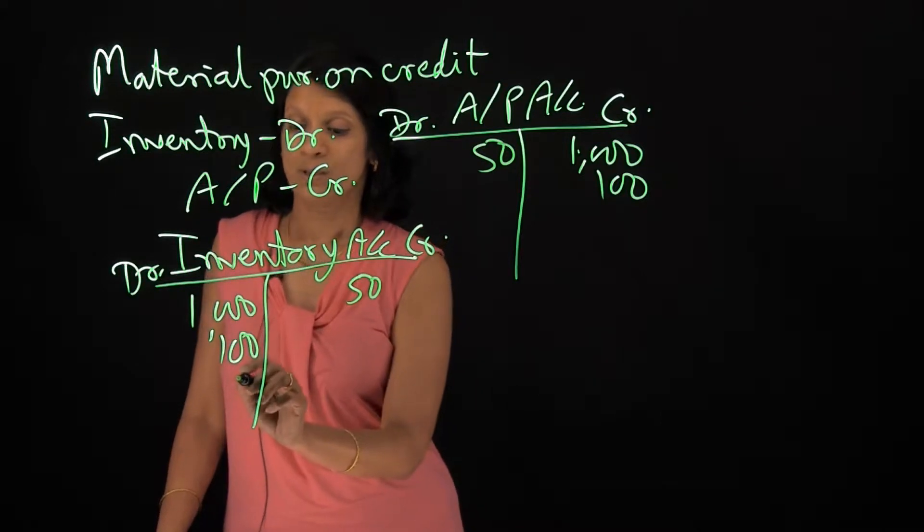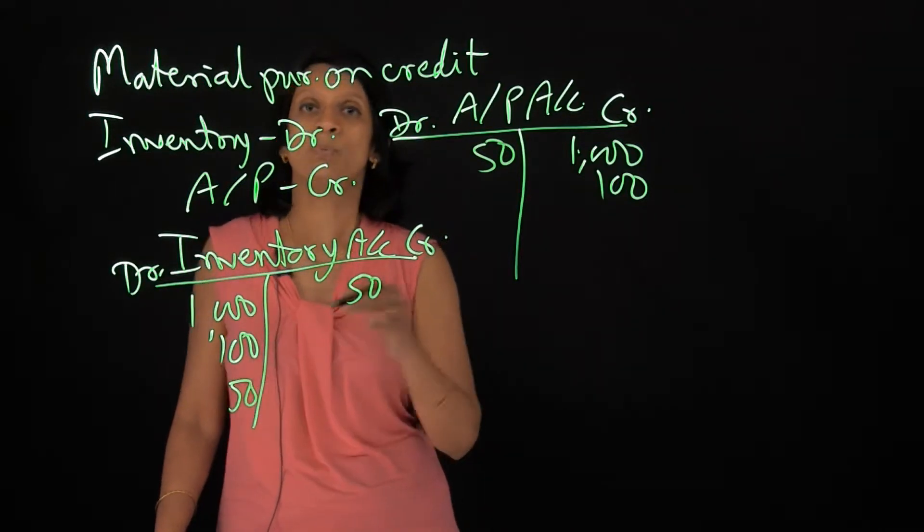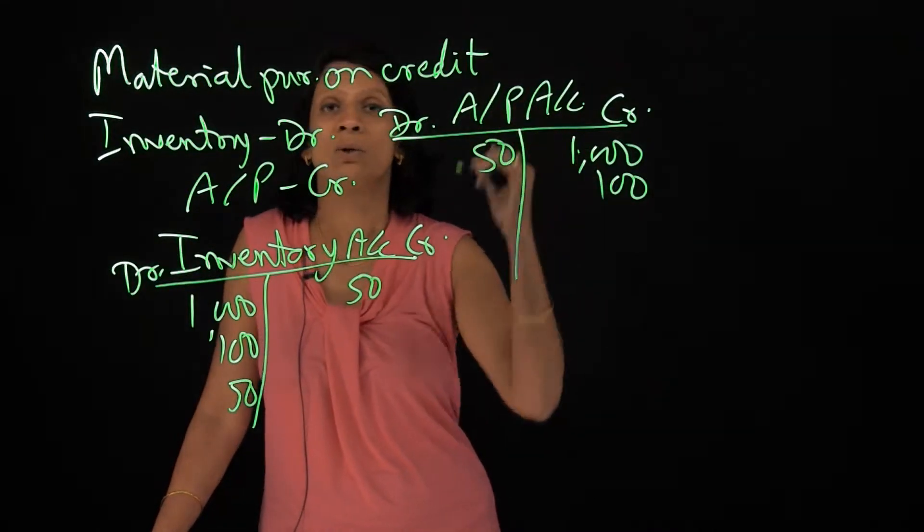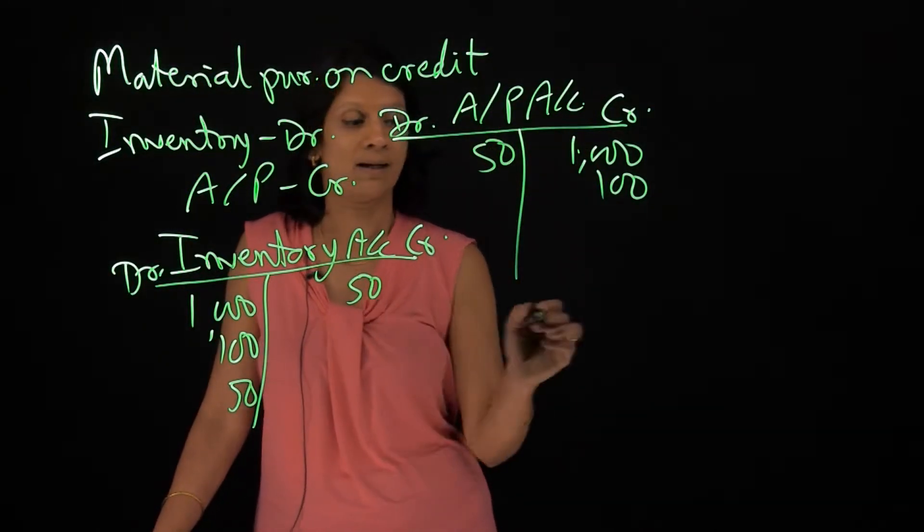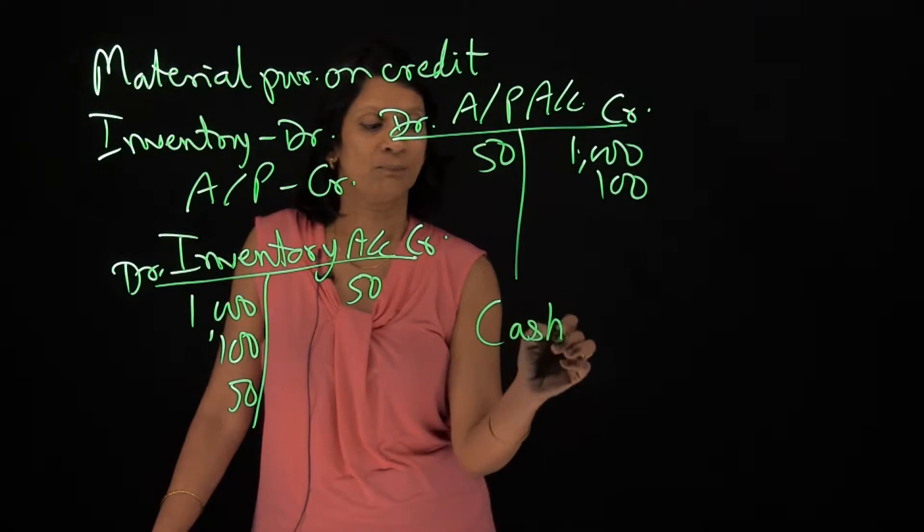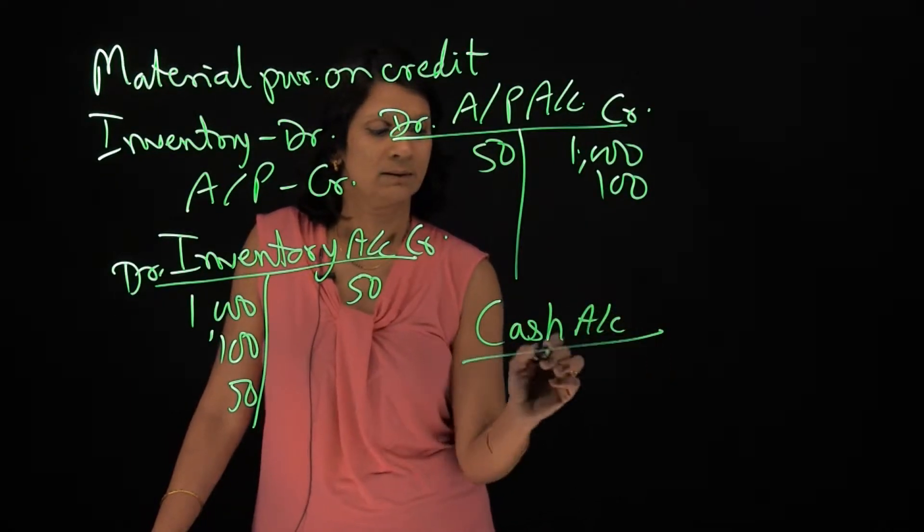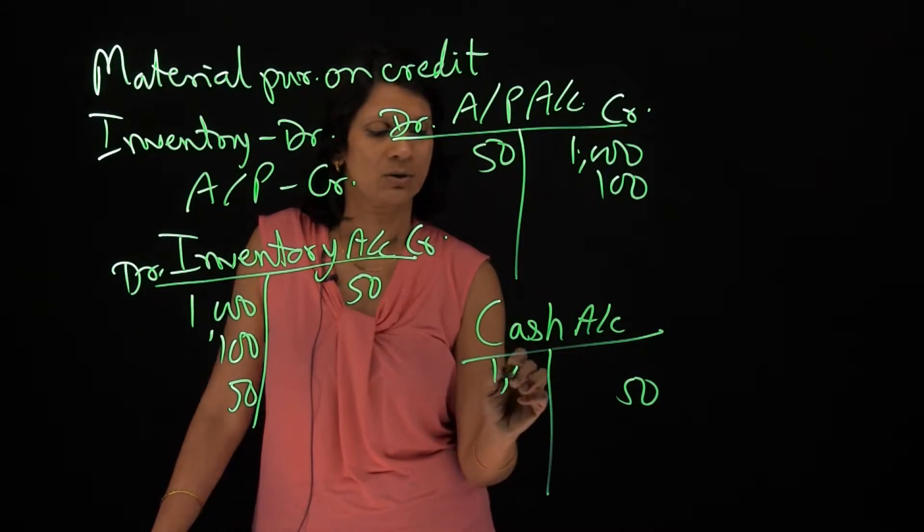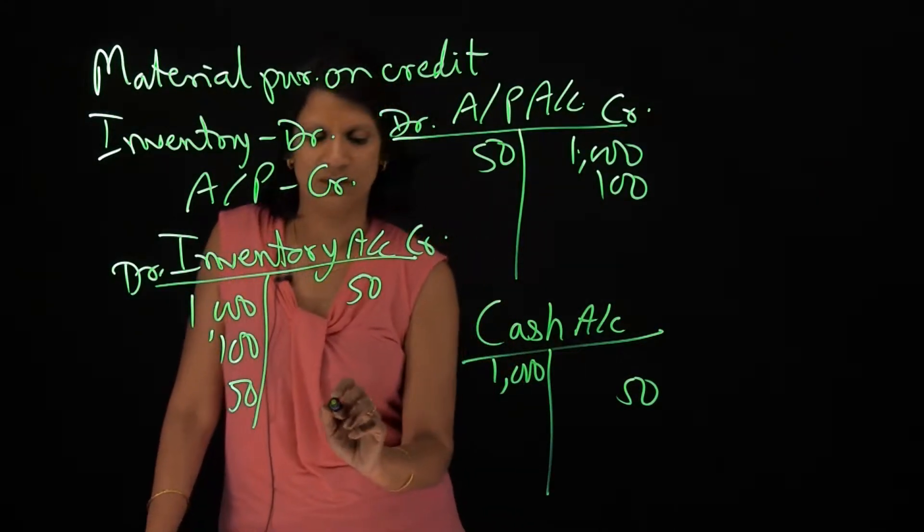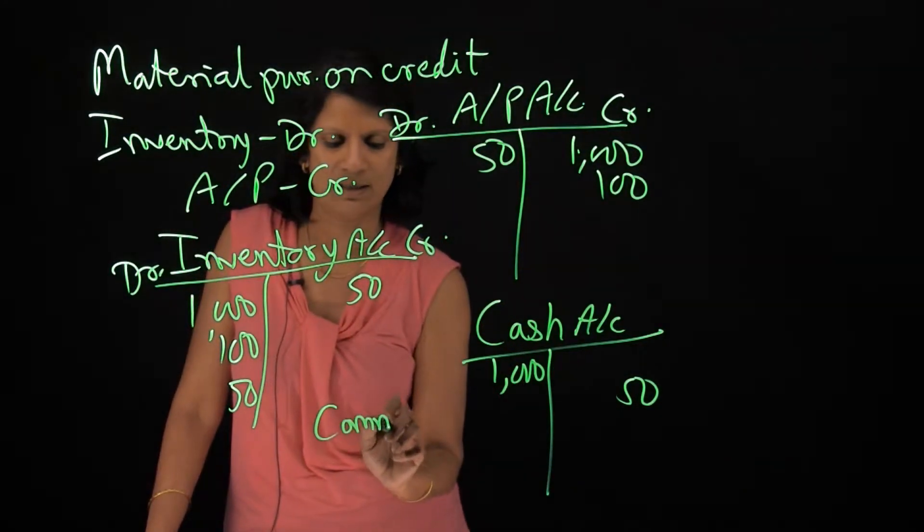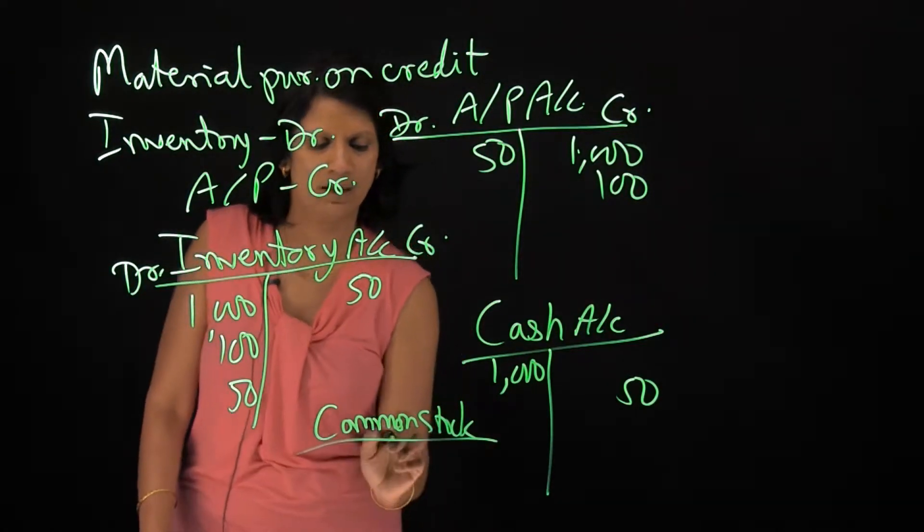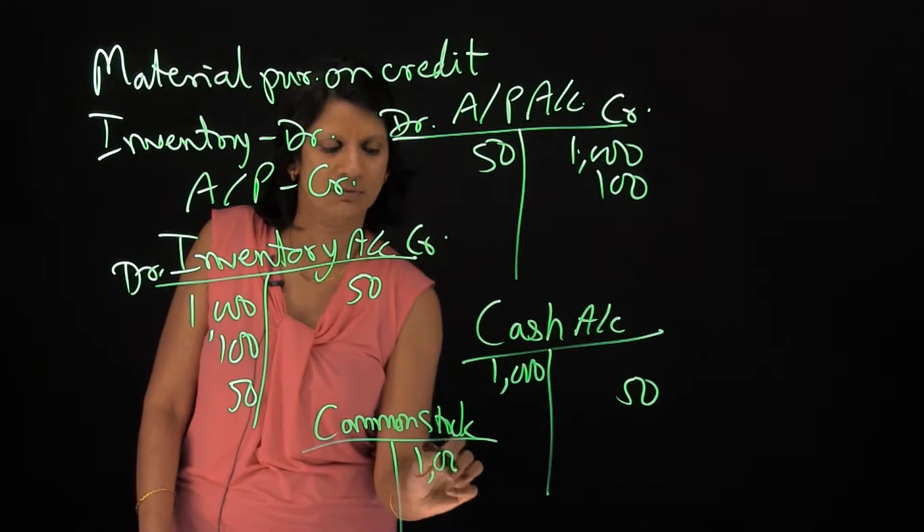Suppose I spent another $50 on transporting the material. Now here, I'm not going to touch the accounts payable account because I paid cash. So let's assume that we already had $1,000 cash, which we had brought in as common stock. That means I brought capital in the business worth $1,000.